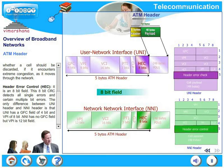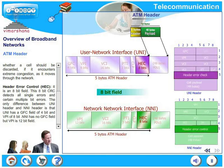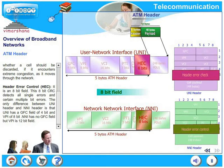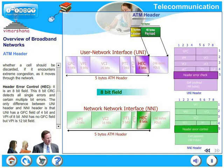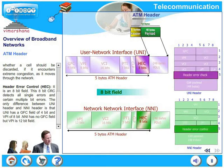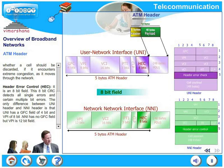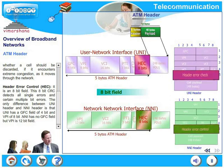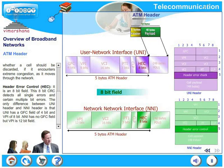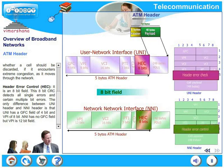The only difference between the UNI header and the NNI header is that UNI has a GFC field of 4 bits and a VPI of 8 bits. NNI, on the other hand, has no GFC field but a VPI of 12 bits.